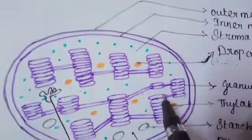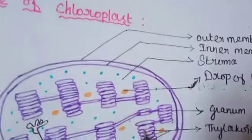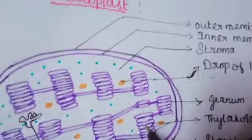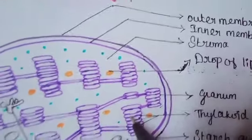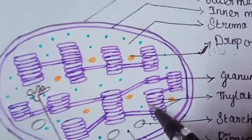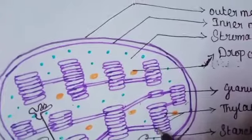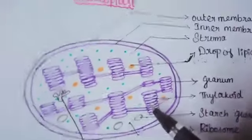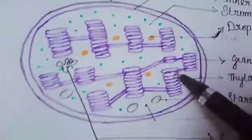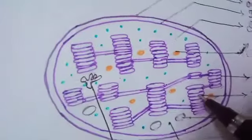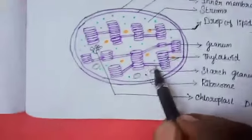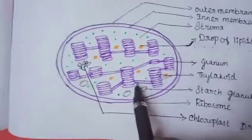The disc-like structures are called thylakoids. Each thylakoid consists of a thylakoid membrane that encloses the thylakoid lumen. Thylakoids form stacks of disc-like structures called grana. Some thylakoids are arranged in the form of discs stacked one above the other. They are interconnected to each other by membranous lamellae called fret channels.